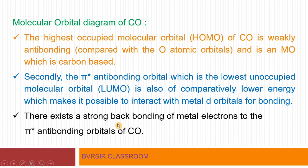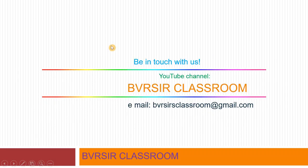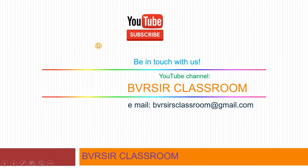This completes the backbonding concept. Because of this molecular orbital diagram of carbon monoxide, three important concepts arise: the backbonding concept, the IR spectrum interpretation, and the molecular orbital diagram of carbon monoxide itself.